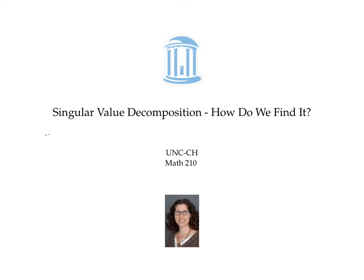Recall that a singular value decomposition for a matrix A is a way of writing A as the product of three matrices: a square orthogonal matrix U, a rectangular diagonal matrix sigma with the same dimensions as A, and a square orthogonal matrix V transpose. In this video, I'll walk you through an algorithm to start with the matrix A and find these three matrices U, sigma, and V.